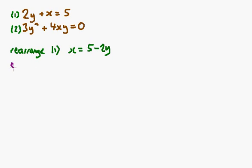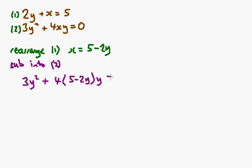So sub into 2. I've got the 3y squared, plus 4 times x, which is now 5 take away 2y, times y is equal to 0.